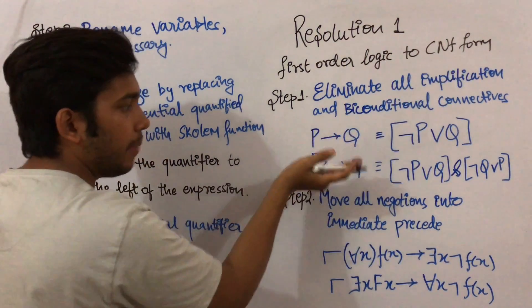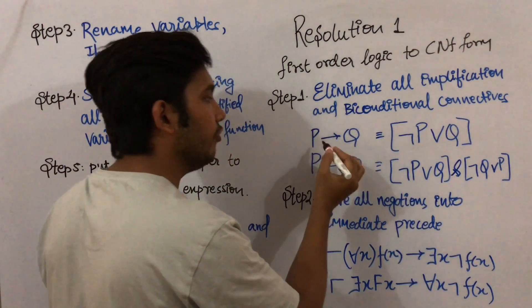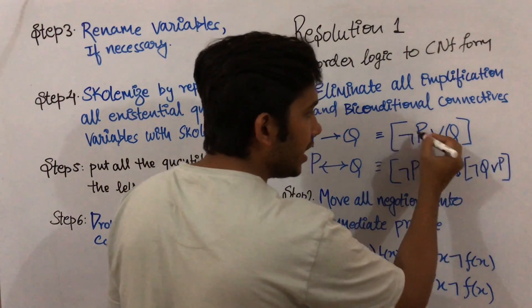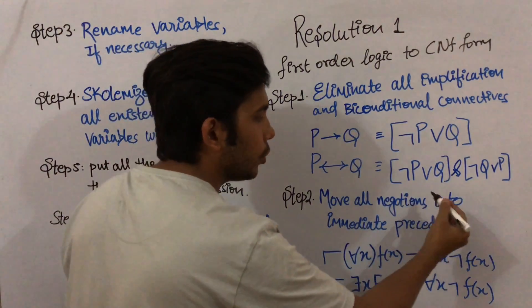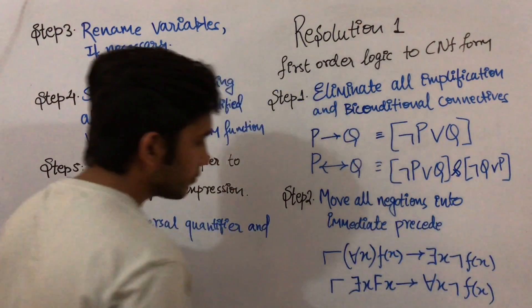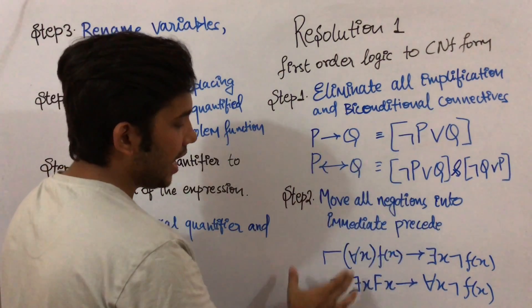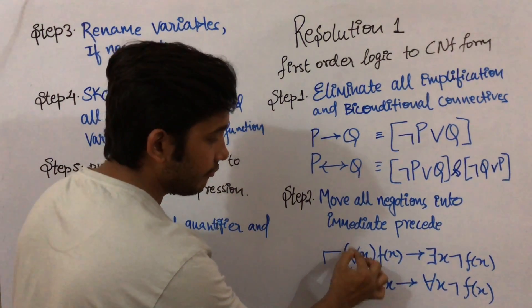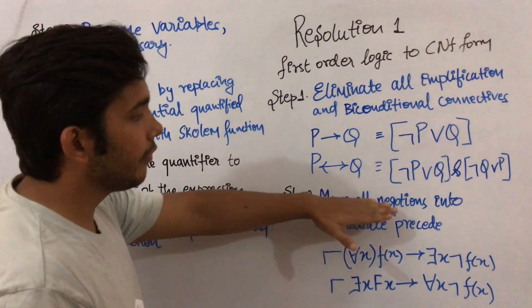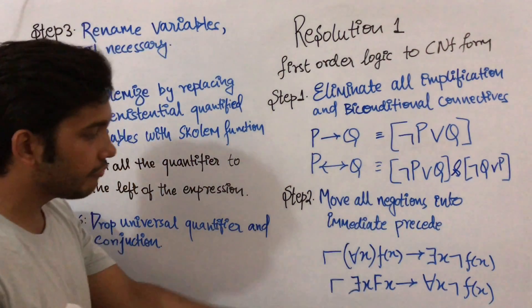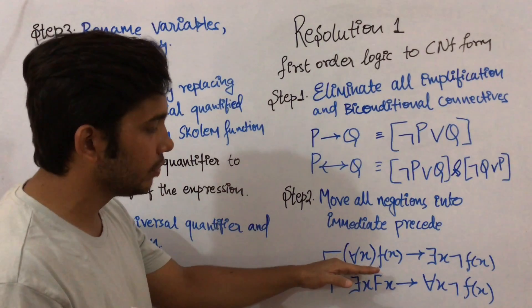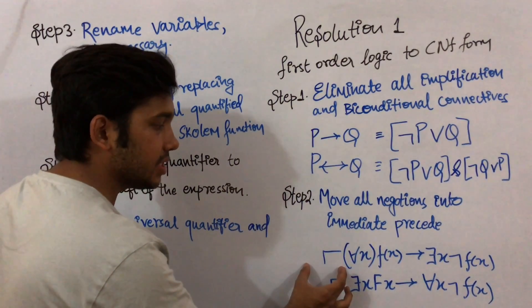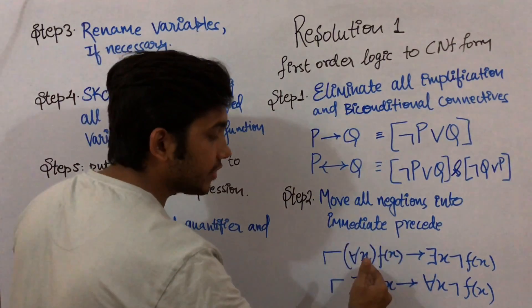Now moving to the second step. In step one we removed all implication and biconditional symbols. Now in step two we move all negation into immediate scope. For example, for a statement like 'all Indians love football', in this step we handle quantifiers. If there is a negation symbol in front of a universal quantifier, we move the negation symbol after the quantifier.